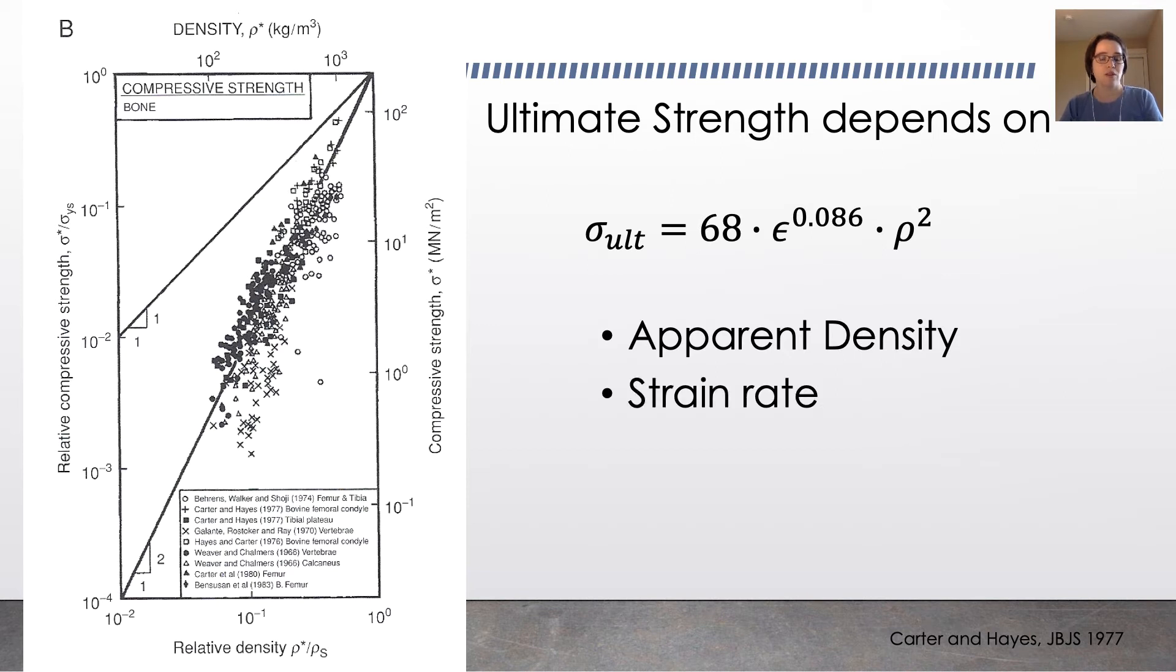You'll also find looking at bone density and ultimate strength relationships that bone's ultimate strength depends on the strain rate of the bone. And that happens because bone is a viscoelastic tissue. Its loading is rate dependent and history dependent.